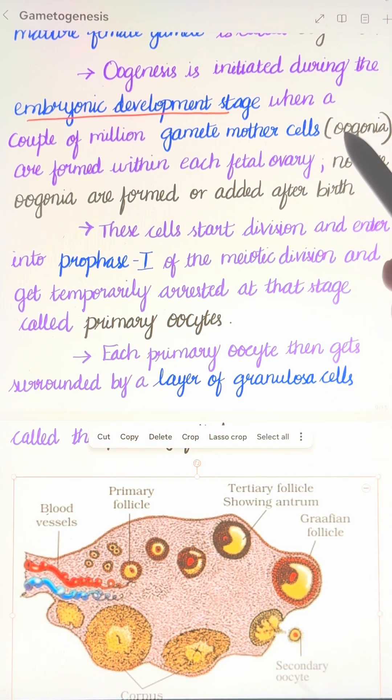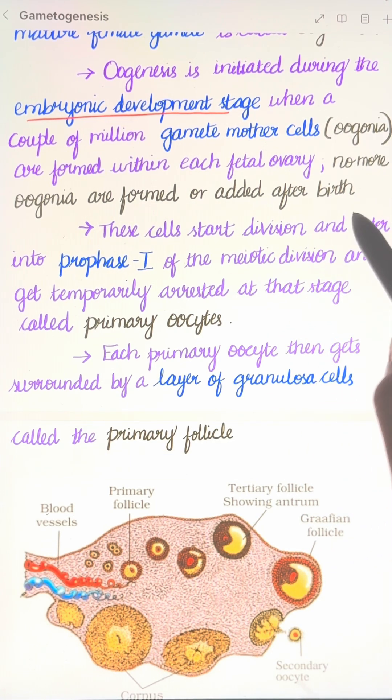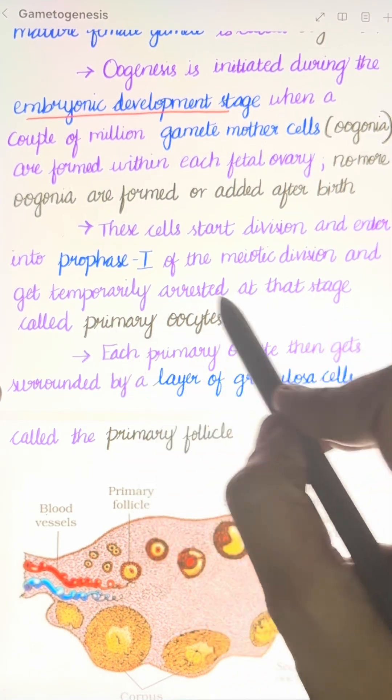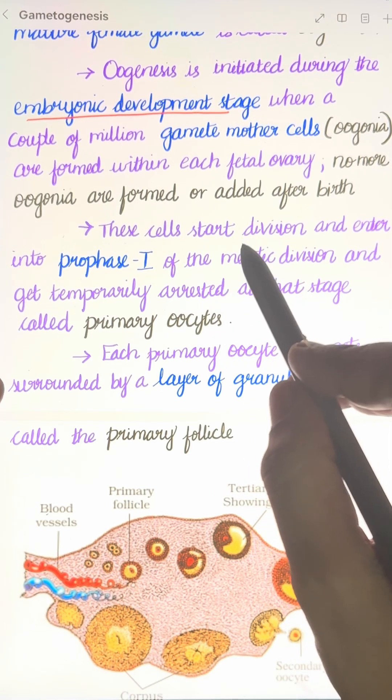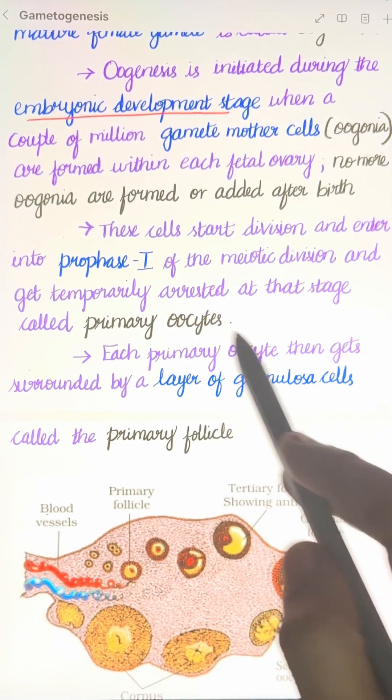The gamete mother cells start dividing and undergo mitotic division to form primary oocytes. In the primary oocytes, meiosis gets temporarily arrested at prophase I.